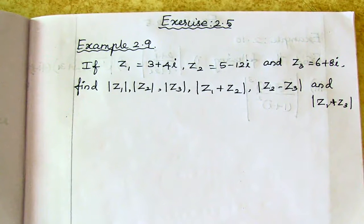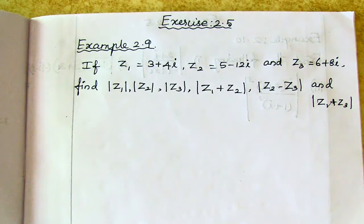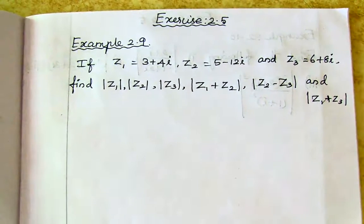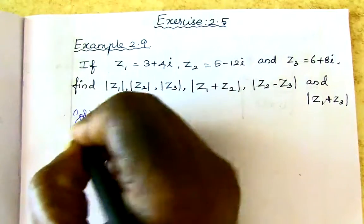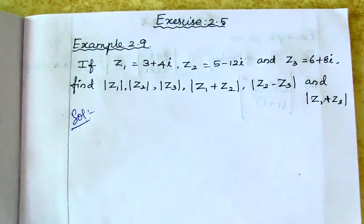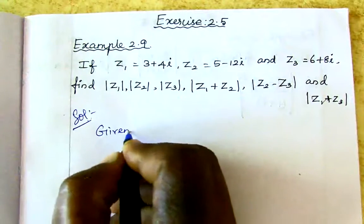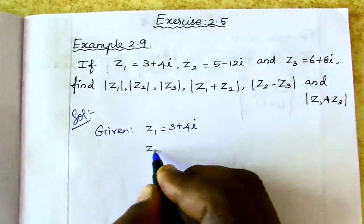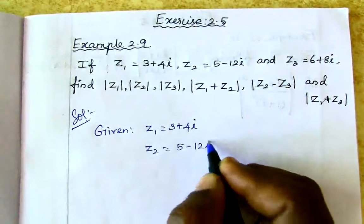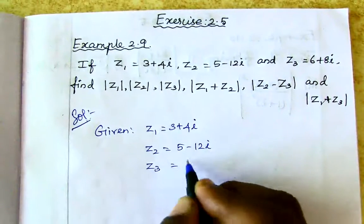Next, find modulus of z1 plus z2, modulus of z2 minus z3, and modulus of z1 plus z3. z1 is equal to 3 plus 4i, z2 is equal to 5 minus 12i, z3 is equal to 6 plus 8i.